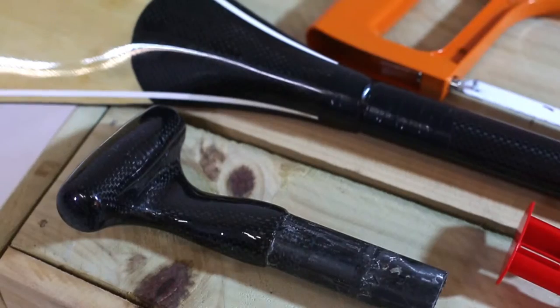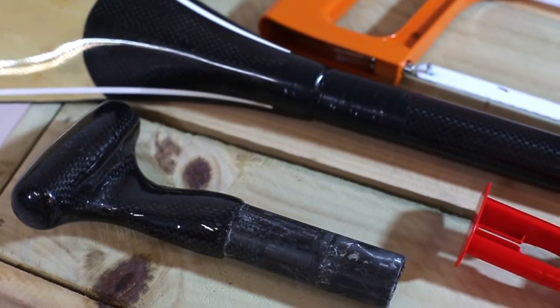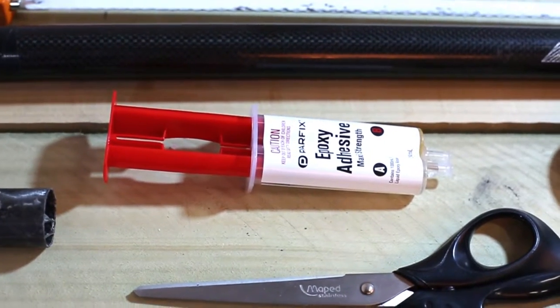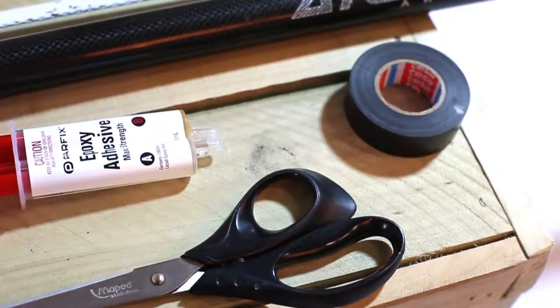To cut your paddle to size you'll need a paddle handle, epoxy two-part adhesive, scissors, black duct tape and a hacksaw with a sharp blade.